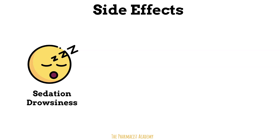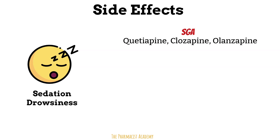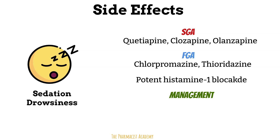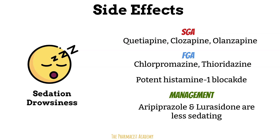Next, sedation and drowsiness. This is generally seen with both classes but really depends on which agent is used. For second generation antipsychotics, it's more common with quetiapine, clozapine, and olanzapine. For first generation antipsychotics, it's chlorpromazine and thioridazine. The reason this side effect occurs in both classes is because of potent histamine blockade — the high potency of the blockade is why this side effect is seen specifically with these agents and not all drugs in the class. Sedation can be managed by switching to agents like aripiprazole and lurasidone, which are less sedating, or by taking medications at bedtime and adjusting the dose to minimize daytime sedation.